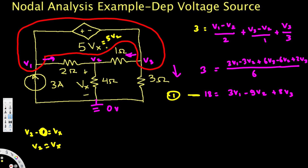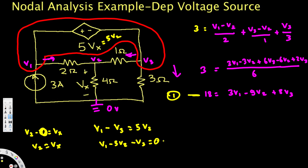Since the voltage source is 5V2, the higher potential terminal at V1 minus the lower potential terminal at V3 must equal 5V2. Rearranging with all variables on one side: V1 − 5V2 − V3 = 0. This is Equation 2.